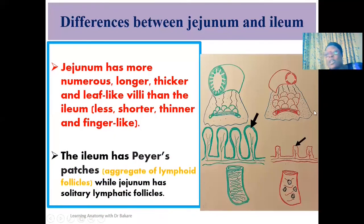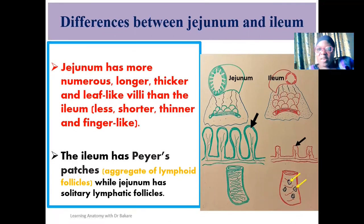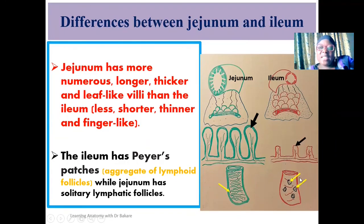In the ileum, we have Peyer's patches, which are collections or aggregations of lymphoid follicles with immune function. Within the ileum, you can see aggregated collections of lymphoid follicles highlighted together — these are the Peyer's patches. In the jejunum, the lymphoid follicles are seen as solitary, scattered within the mucous membrane rather than collected together.